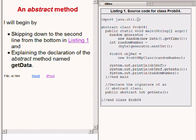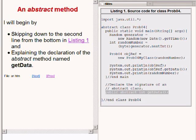Now let's turn our attention to the concept of an abstract method. I will begin by skipping down to the highlighted line of code on the right of your screen and explaining the declaration of the abstract method named getData.